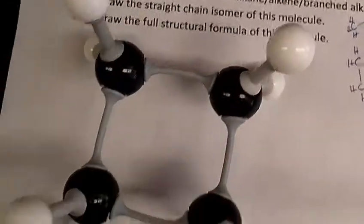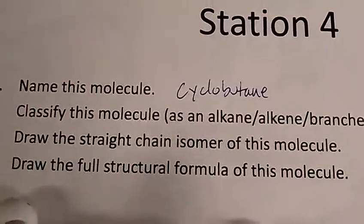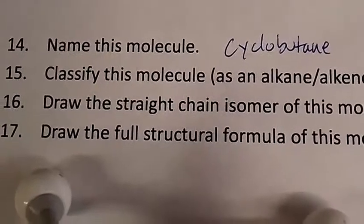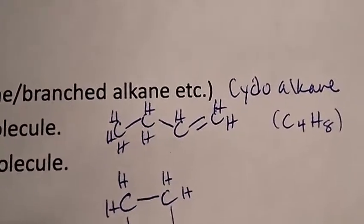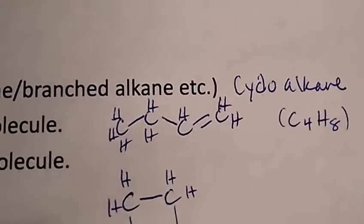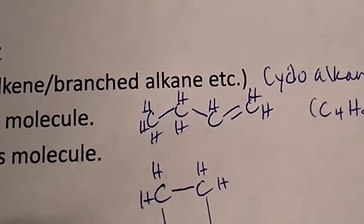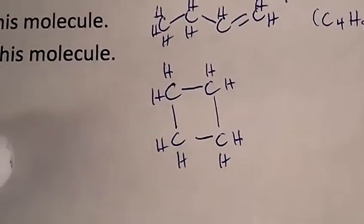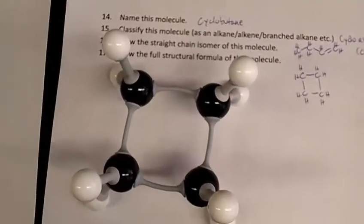Station four was this molecule, and it is cyclobutane. It is technically a cyclic alkane, or a cycloalkane. If we're going to draw an isomer, we use the same number of carbons and the same number of hydrogens. To draw a straight chain, we need to draw a butene — this would be one-butene, or two-butene, either cis or trans. Two-butene would be a good isomer of cyclobutane. This is the full structural formula for cyclobutane.